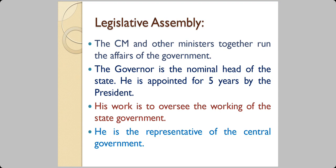The governor is the nominal head of the state, appointed by the president for five years. The governor is not from the state government — he or she is from the central government and reports directly to the president. The governor's work is to oversee the working of the state government and act as the representative of the central government.